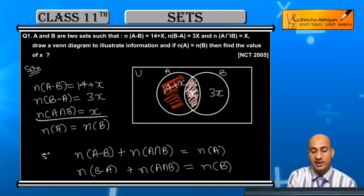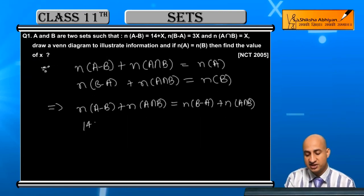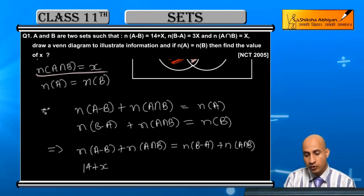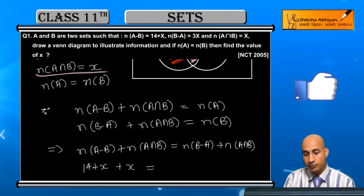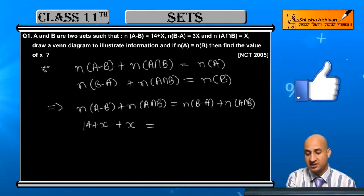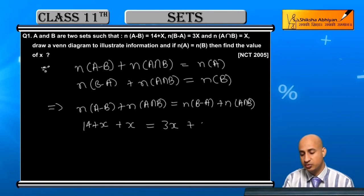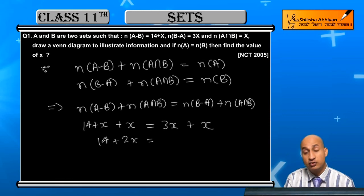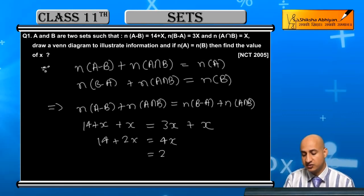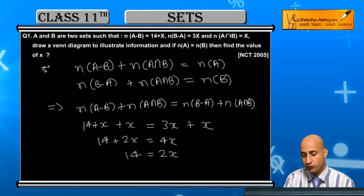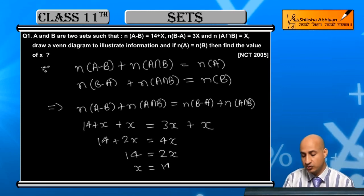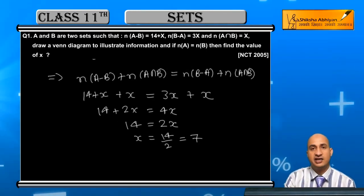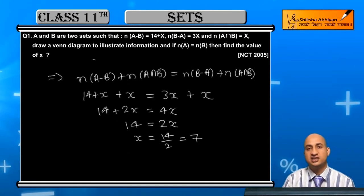All these values are given. A minus B is 14+x, so 14+x. A intersection B is x. B minus A is 3x, so 3x, and again x. Simplifying: 14+2x = 3x+x. This becomes 14+2x = 4x. This gives 14 = 2x, so x = 14/2, which equals 7. This is the value we needed to find. So x = 7 is the answer.